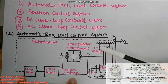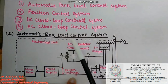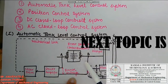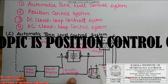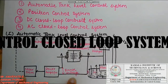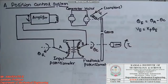This automatic tank level control system maintains the liquid level at the required position by opening and closing of the valves. It reduces the wastage of water and is used to control the water supply by reducing human intervention.